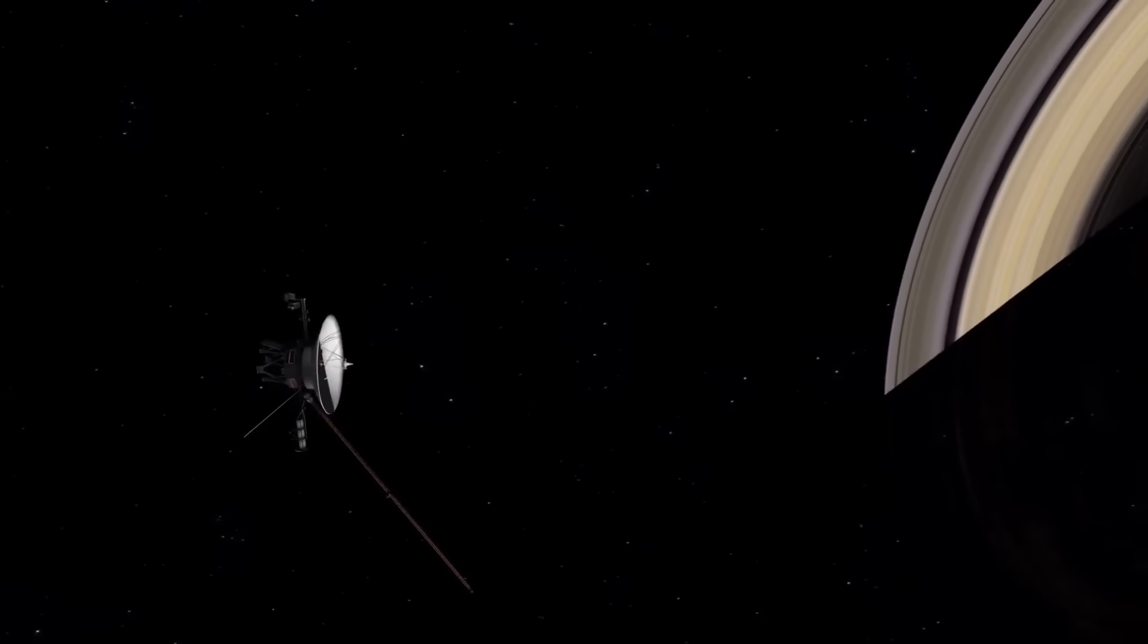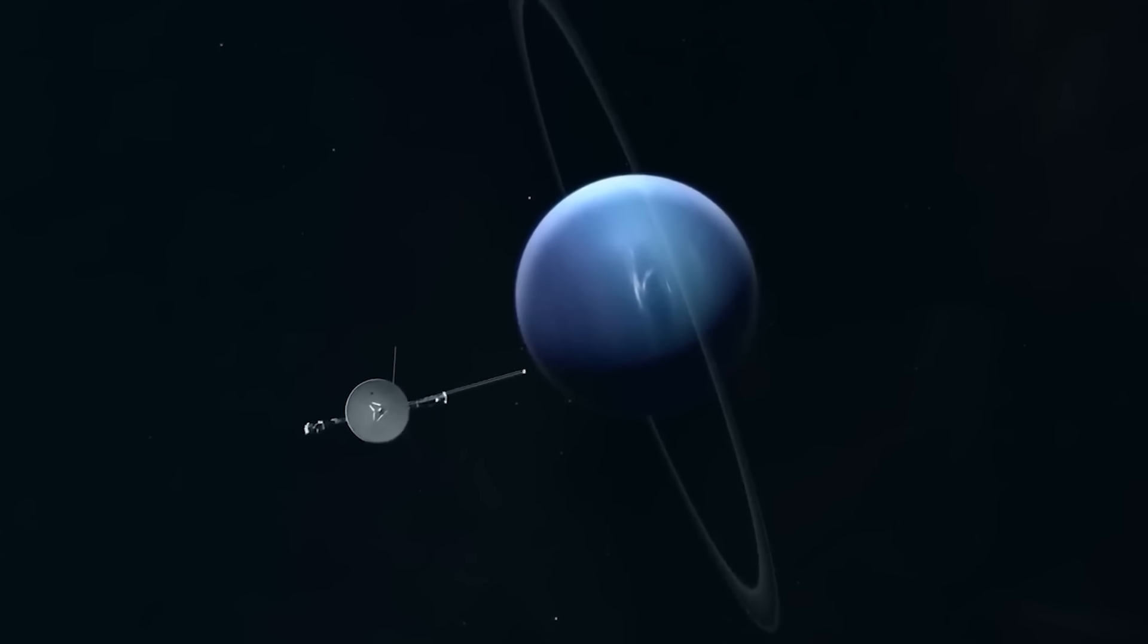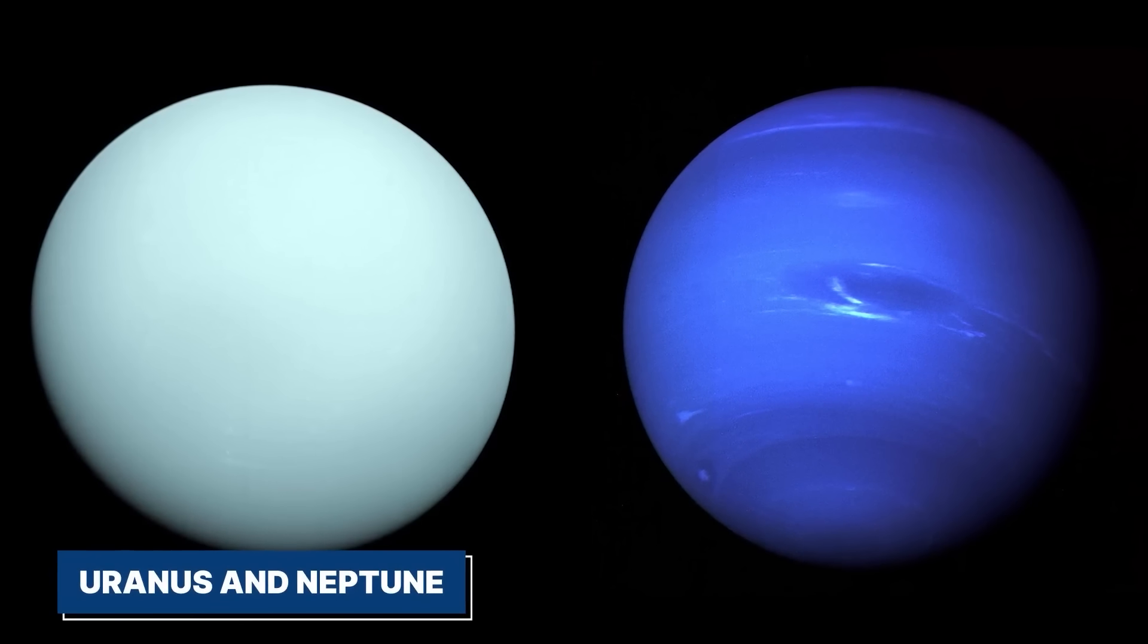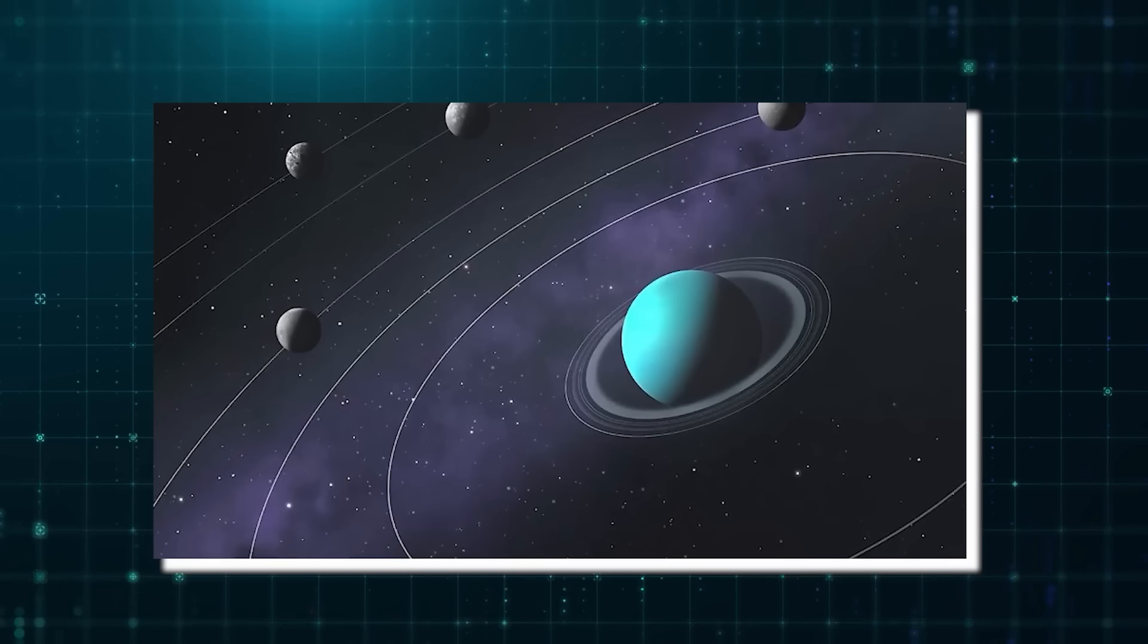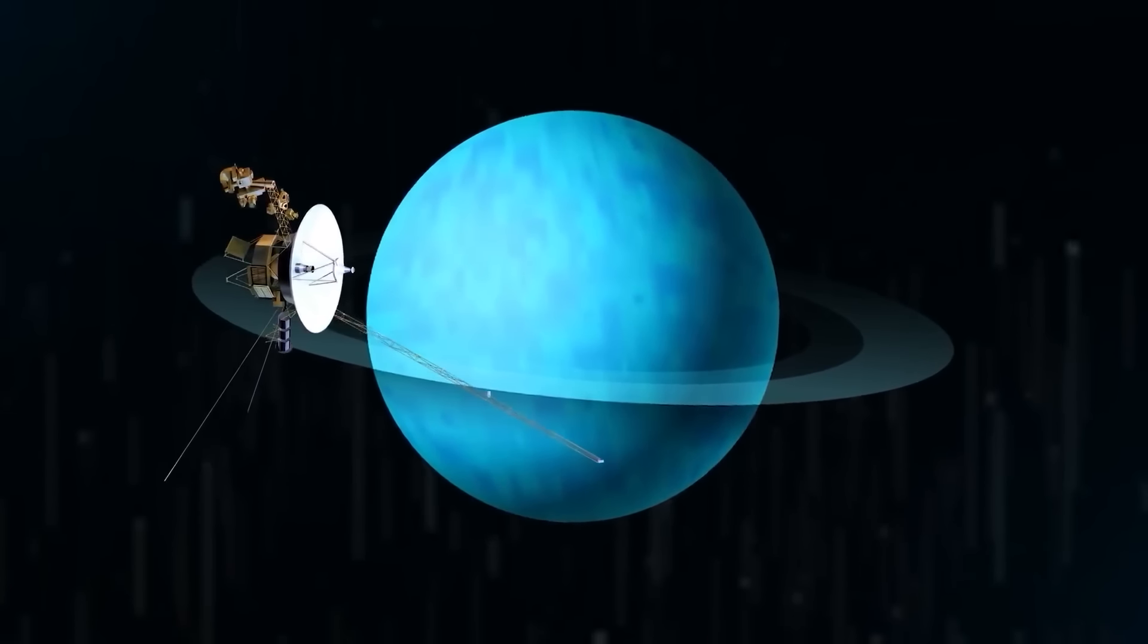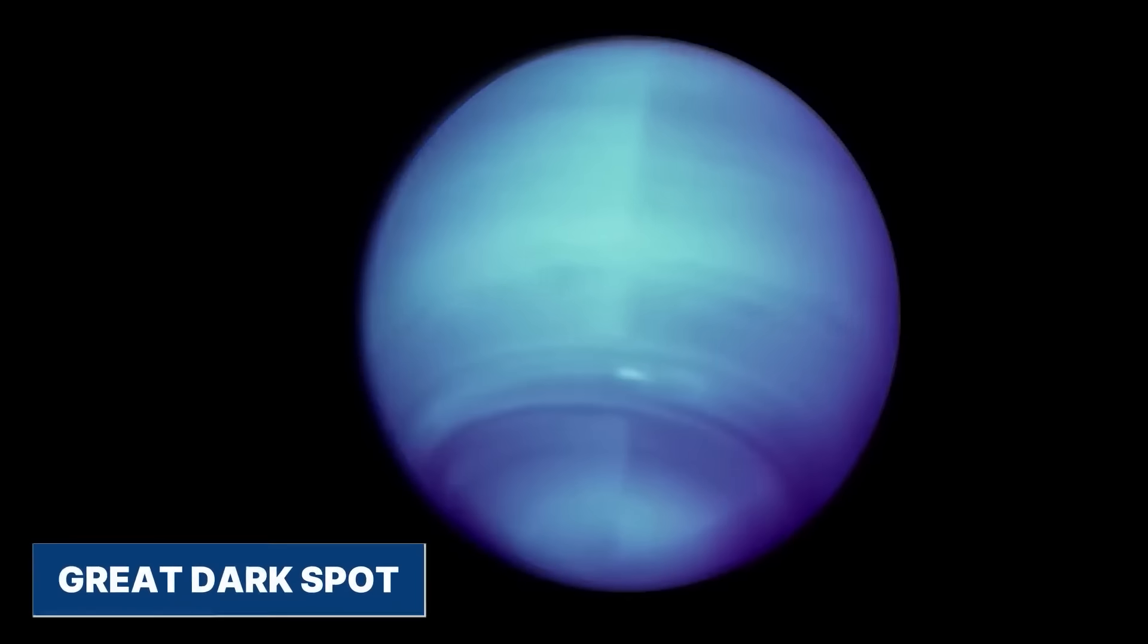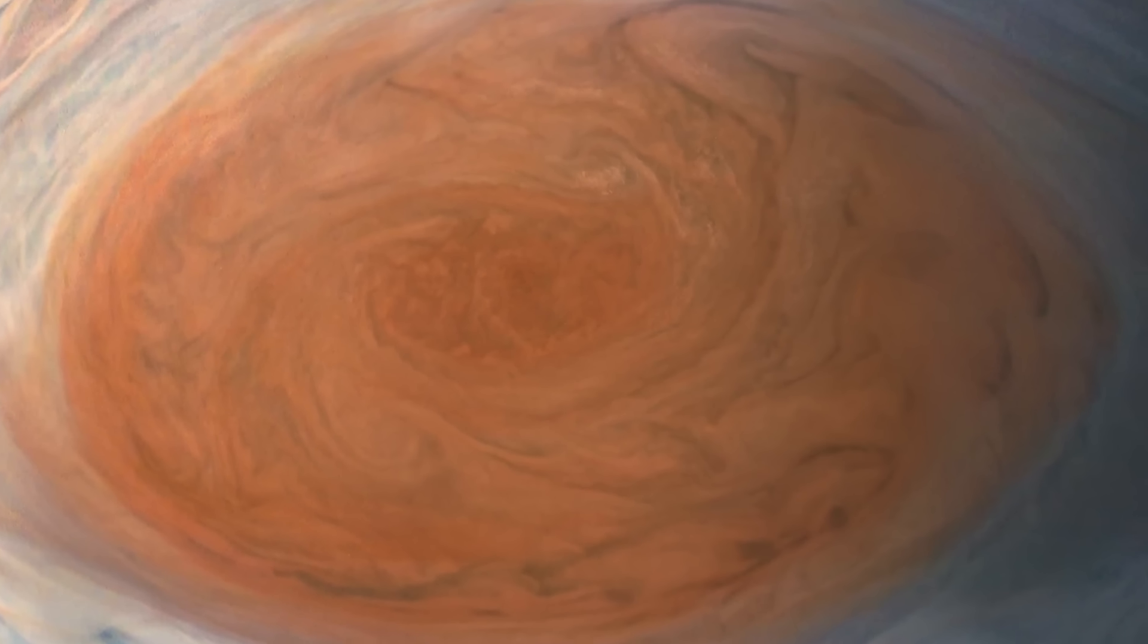The encounters with Uranus and Neptune were equally groundbreaking. Voyager 2 was the only spacecraft to visit these distant planets and discovered several new moons orbiting each one. Voyager 2 also captured detailed images of Uranus's unusual rings and Neptune's Great Dark Spot, a massive storm similar to Jupiter's Great Red Spot.